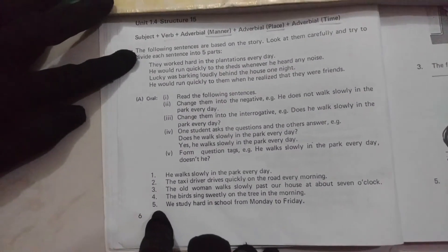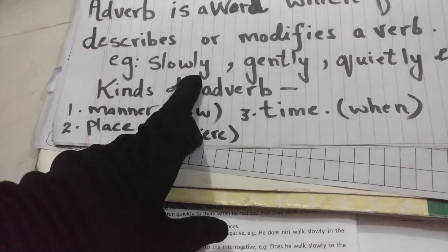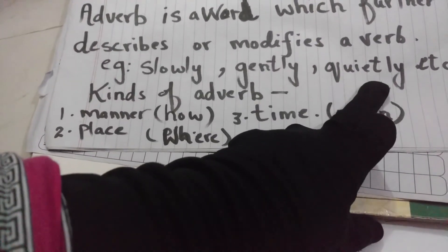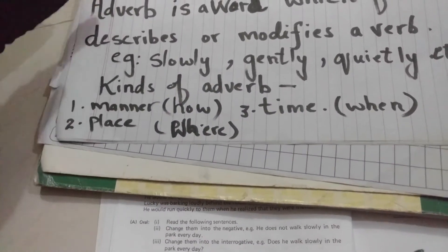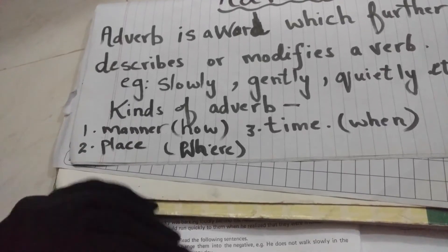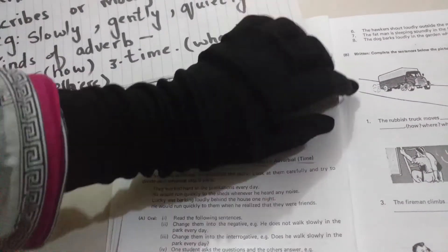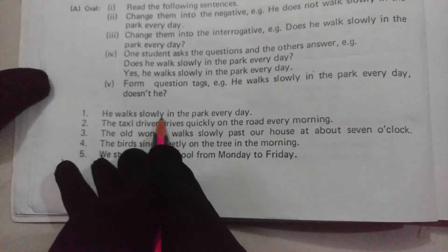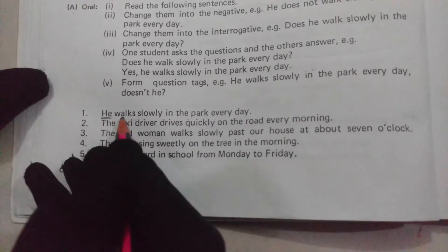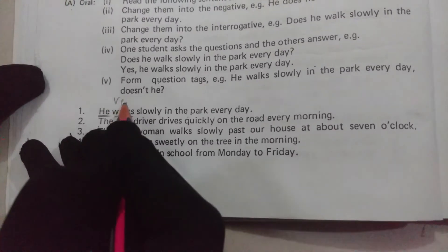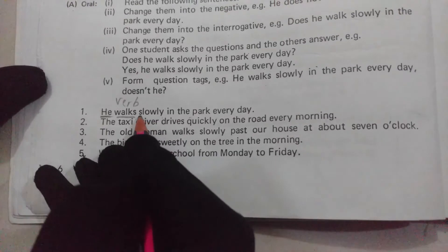Now let's come to the book. Here we have examples of adverbs. Students should note that mostly adverb words end in '-ly', such as slowly, gently, quietly. As we go through examples, the concept will become clearer. There is also a good activity on page number 7 which you will solve.